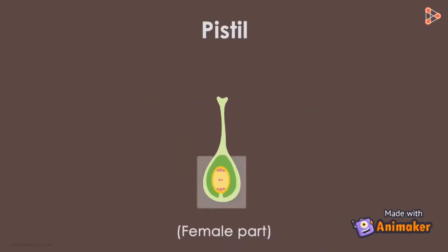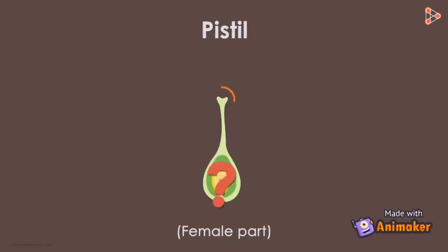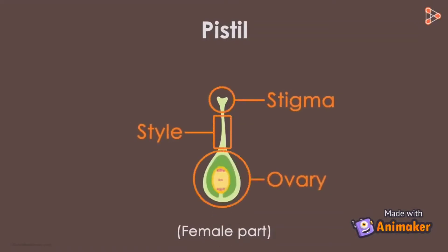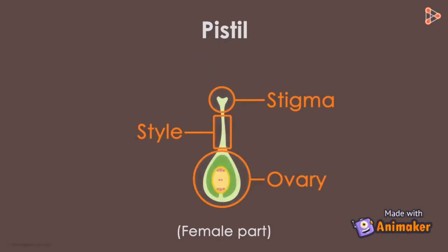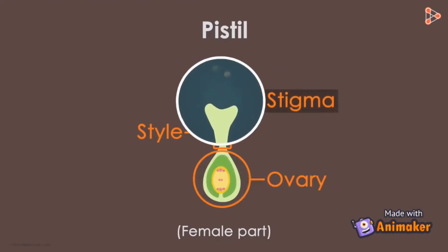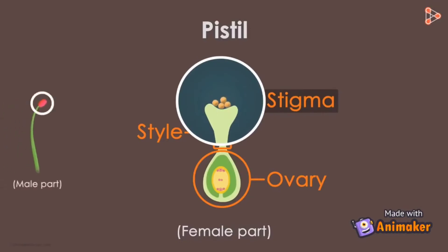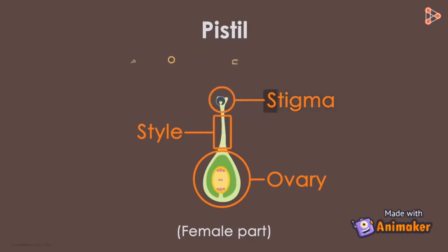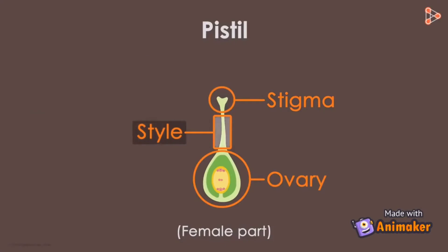The pistil has three distinct sub-parts: the stigma, style, and the ovary. The part called stigma is the landing place for the pollen. Pollen from the male part, the anther, lands on the stigma and germinates further. This process is what we call pollination in plants. Next comes the style, which is a slender stalk that holds up the stigma in position and connects it with the ovary.